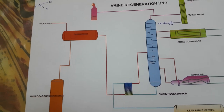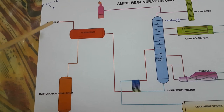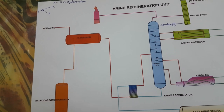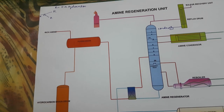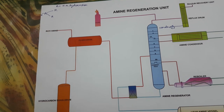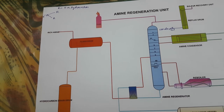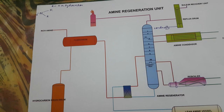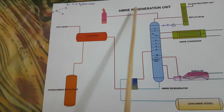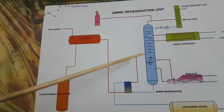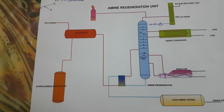Now we will go for the detailed explanation. This is the flash drum. We get rich amine from the amine treating unit. The amine treating unit has one contactor — an absorption column, packed column, or tray column — in which sour gas goes from the bottom and lean amine is circulated from the top with the help of a pump. The lean amine absorbs the sour gas and the resultant gas will be sweet gas. From the bottom, rich amine comes out and is sent to the amine regeneration unit.